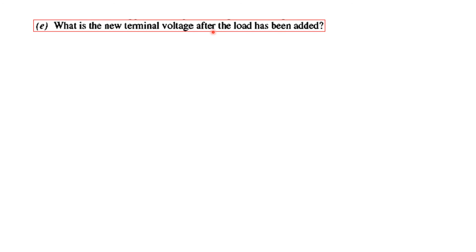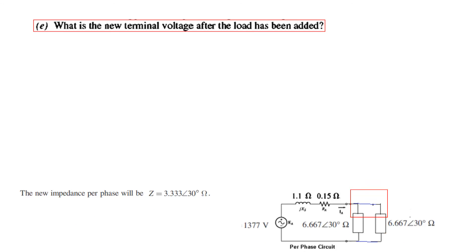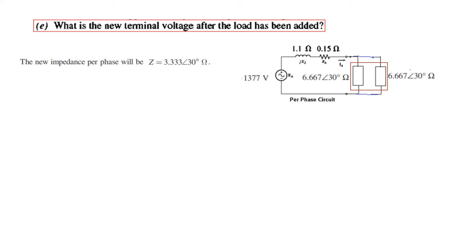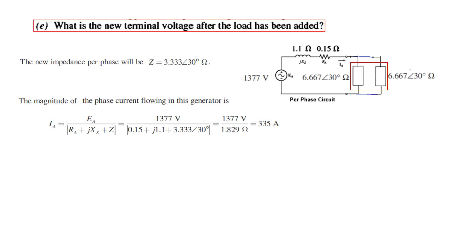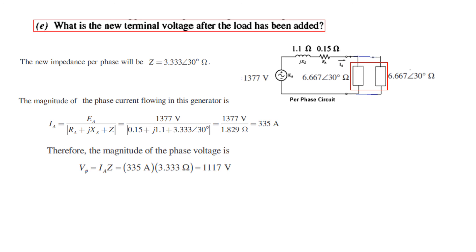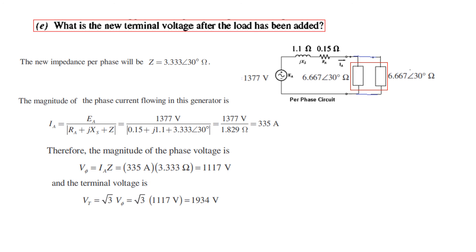Finally, what is the new terminal voltage after the load has been added? With two parallel delta loads, the overall equivalent impedance decreases to half — 3.33 angle 30. Recalculating, the new phase current is 335 amperes. Then the magnitude of the new phase voltage is found using V-phase = Ia times Z, giving 117 volts. Using root 3 times V-phase new, the new terminal voltage is 1934 volts.